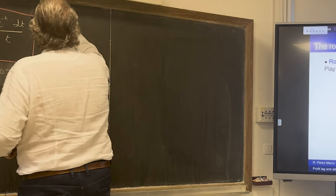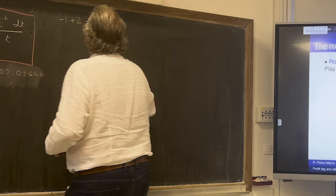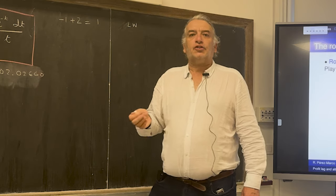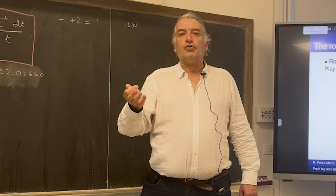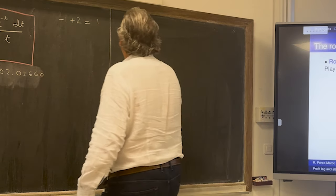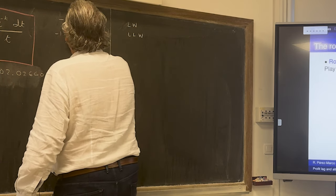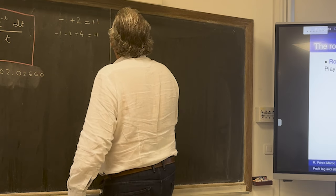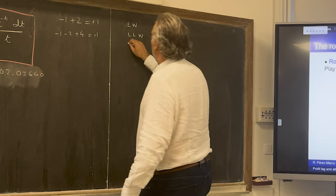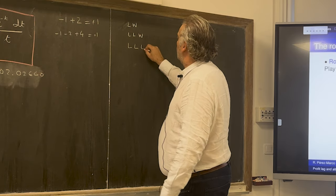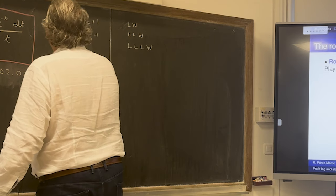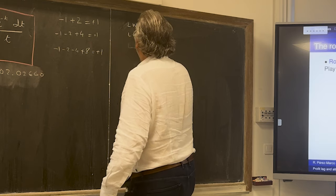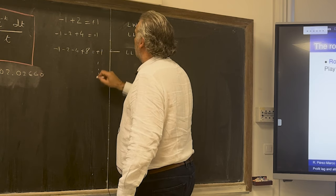If you lose one and then win two, you've won one euro net. If you lose a second time, you bet four. If you lose once, lose again, then win: minus one, minus two, plus four equals plus one. If you lose three times in a row and then win: minus one, minus two, minus four, plus eight equals plus one. So you always win — you just need to double up every time you lose.